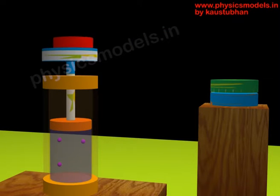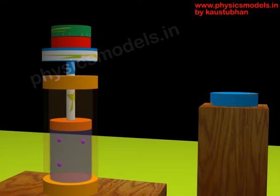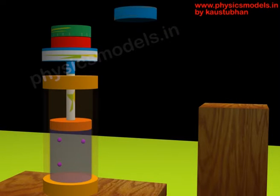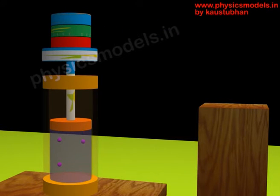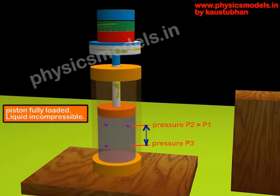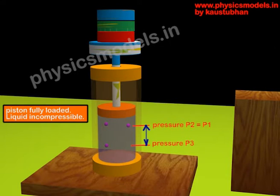We are loading the weights on the piston platform. As we put weights on top, they press down on the piston with additional force. Note that the piston didn't move at all in the animation, even though we loaded a lot of weights. That's because the liquid is assumed to be incompressible in Pascal's Law.